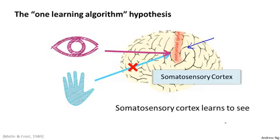And instead of needing to implement a thousand different programs or a thousand different algorithms to do the thousand wonderful things that the brain does, maybe what we need to do is figure out some approximation to whatever the brain's learning algorithm is and implement that, and let the brain learn by itself how to process these different types of data.